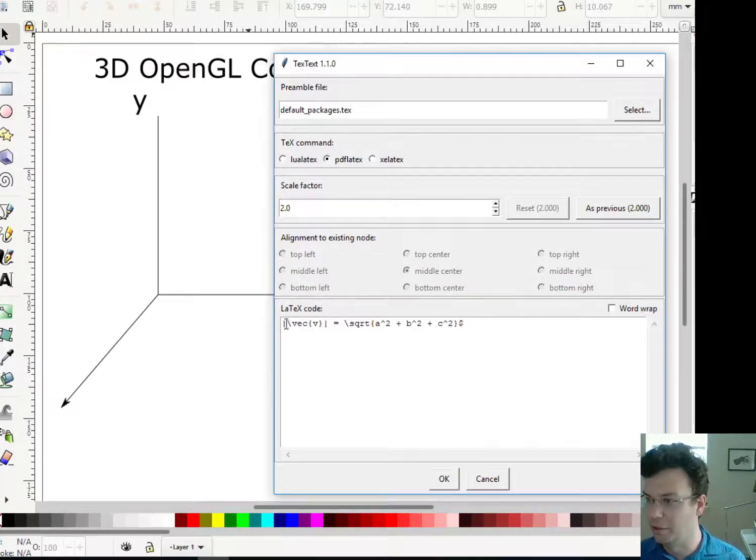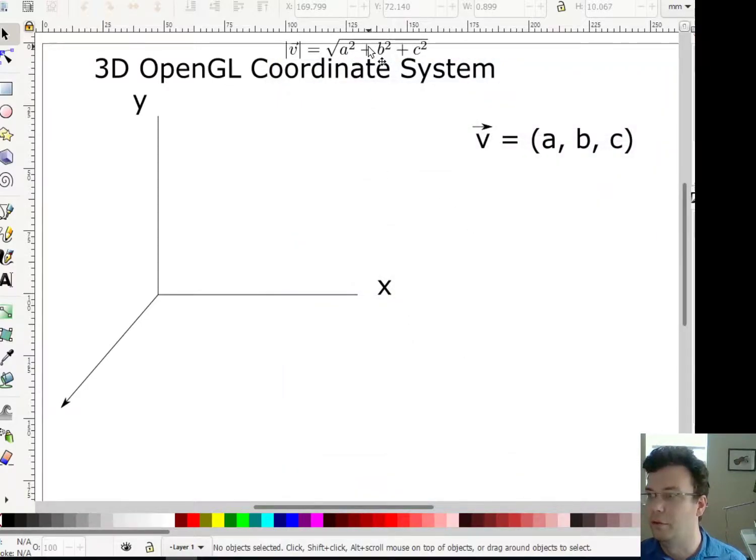And of course, I forgot to put the dollar signs. Okay, there we go. So let's see that formula. Okay, so here's the formula. So this is the magnitude of a vector in 3D. Look at how nice that square root is now.